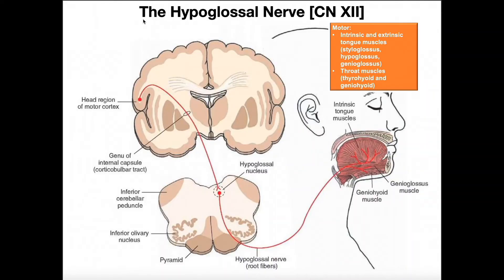Welcome back to Anatomy and Physiology on Catalyst University. In this video, we're going to be discussing the hypoglossal nerve, which is cranial nerve number 12.